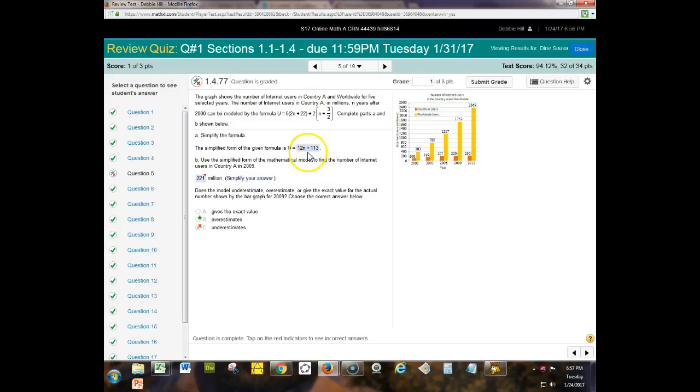So basically what they're saying is when n is 9, what do you get for u. So if you put 9 in here for the n, then you'll get this correct answer of 221.